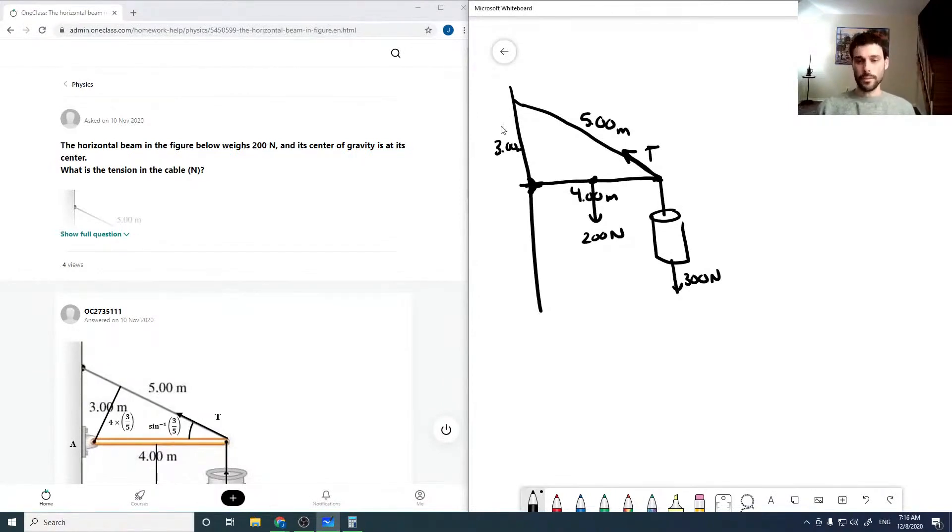When we have something like this, the easiest way is to use torques, not forces. We can use the sum of torques equals I alpha, where I'm using vectorial notation because we want to pay attention to direction. The direction is either going to be out of the page or into the page, defined using our right-hand rule. We've got three torques here.